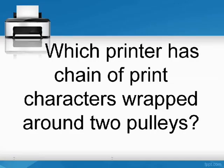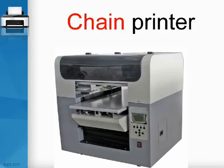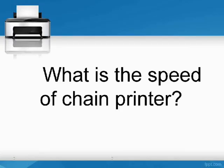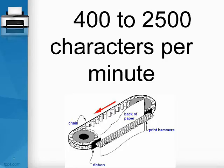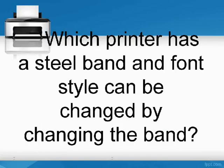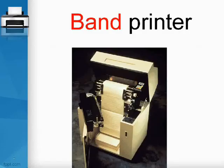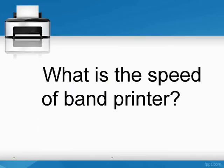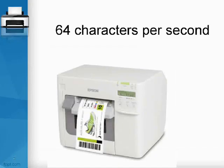The chain printer has a chain of print characters wrapped around two pulleys, with a speed of 400 to 2,500 characters per minute. The band printer has a steel band, and its font style can be changed by changing the band. Its speed is 64 characters per second.